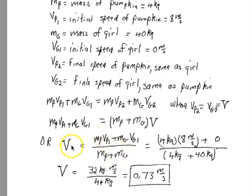So finally we get that the common speed is mass of the pumpkin times the initial speed of the pumpkin, mass of the girl times the initial speed of the girl, divided by the sum of the two masses. We put in the numbers, 4 kilograms times 8 meters per second plus 0 equals 32 kilogram meter per second. Divided by the sum of the masses, 42 kilograms. And we get 0.73 meters per second round off. The girl and the pumpkin are a coupled collision process and they both move off at the same speed.